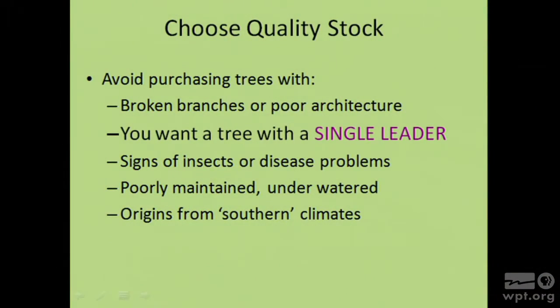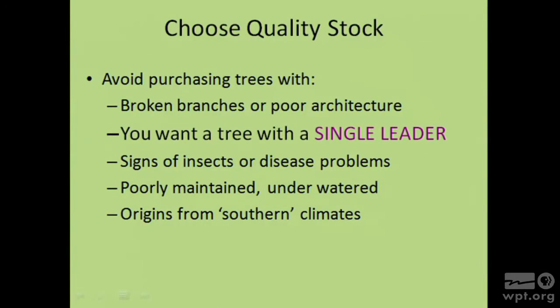If the stock has been poorly maintained or underwatered, those bargain trees on sale at the end of the season aren't always bargains—they've had a lot of stress. Also consider origins from southern climes: if the tag says it came from Tennessee, Georgia, or the Carolinas, that tree probably won't do well here. There's an issue called provenance—where the seed stock came from. Even if it's the same species that grows in our area, a tree from a southern seed source may not perform well. Unfortunately, big box stores often don't know where the tree was produced.